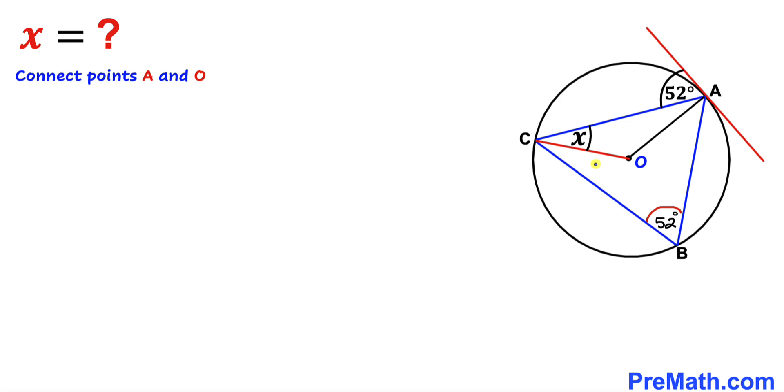Now we can see that OC and OA are the radii of the very same circle. So that means this length is equal to this length. Therefore, triangle AOC is our isosceles triangle.